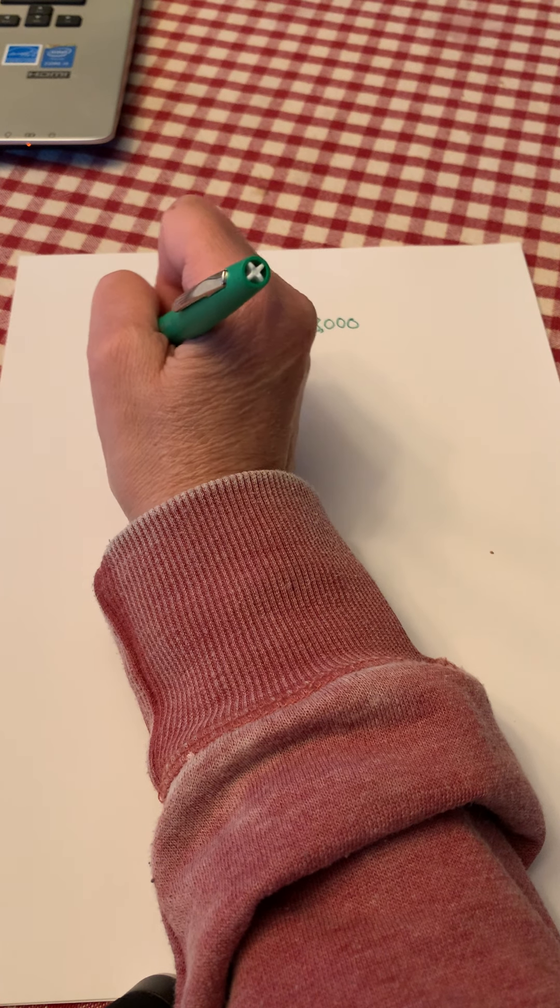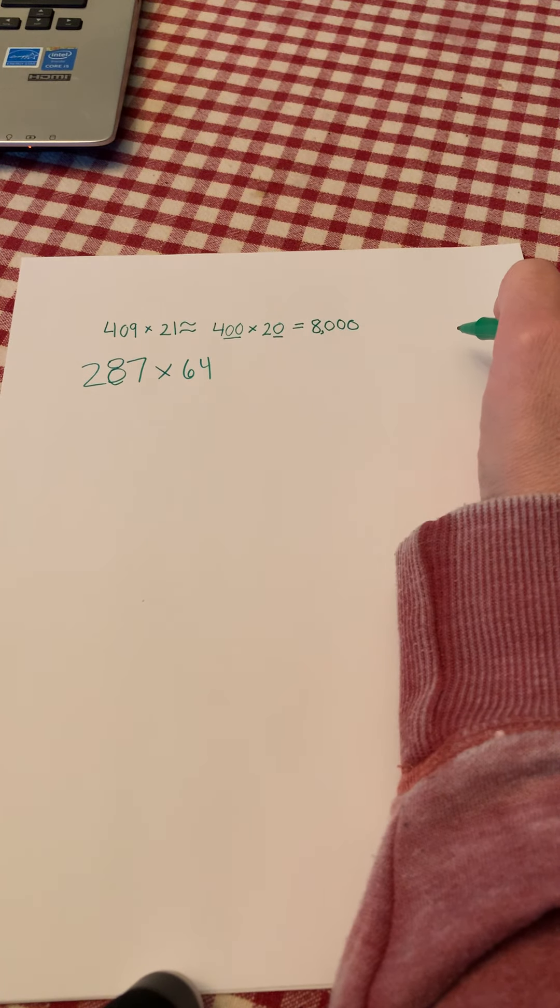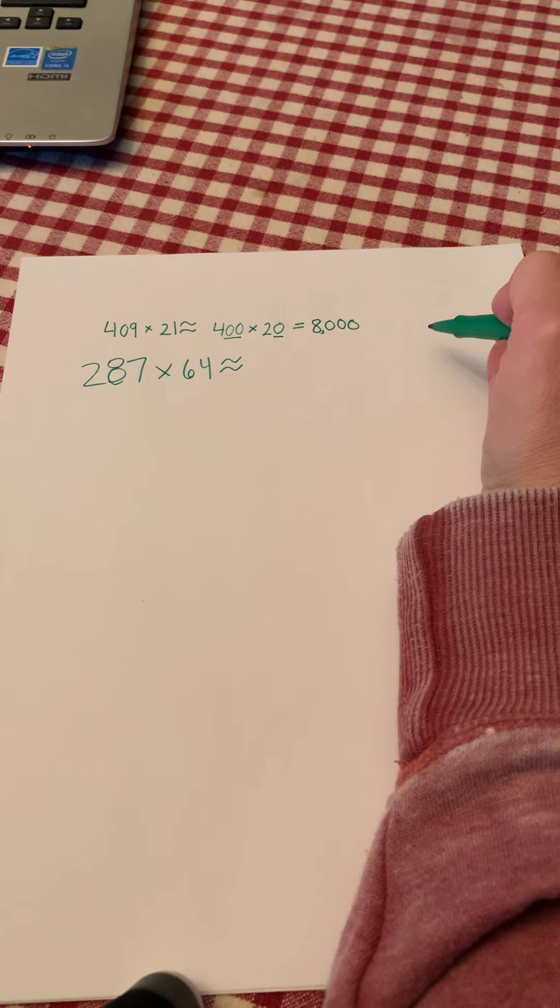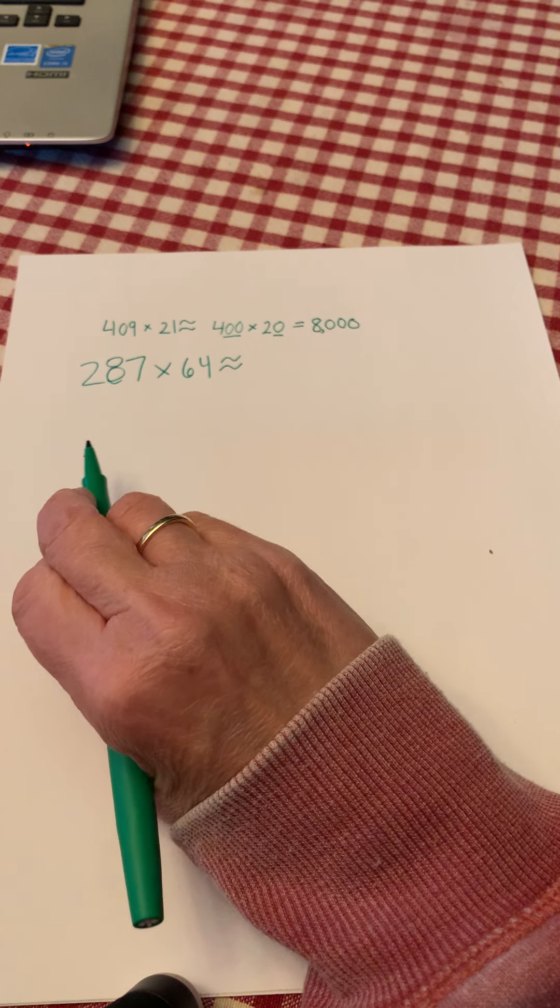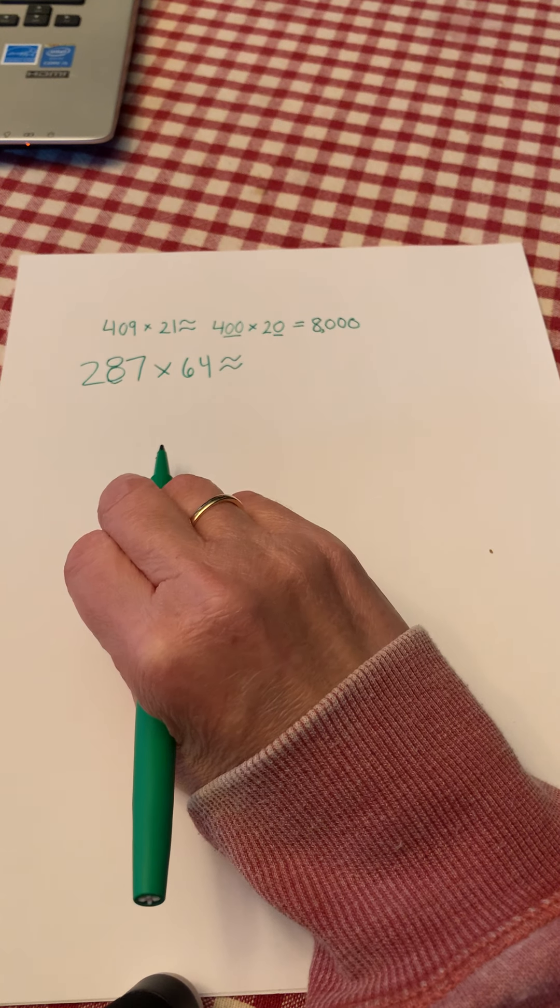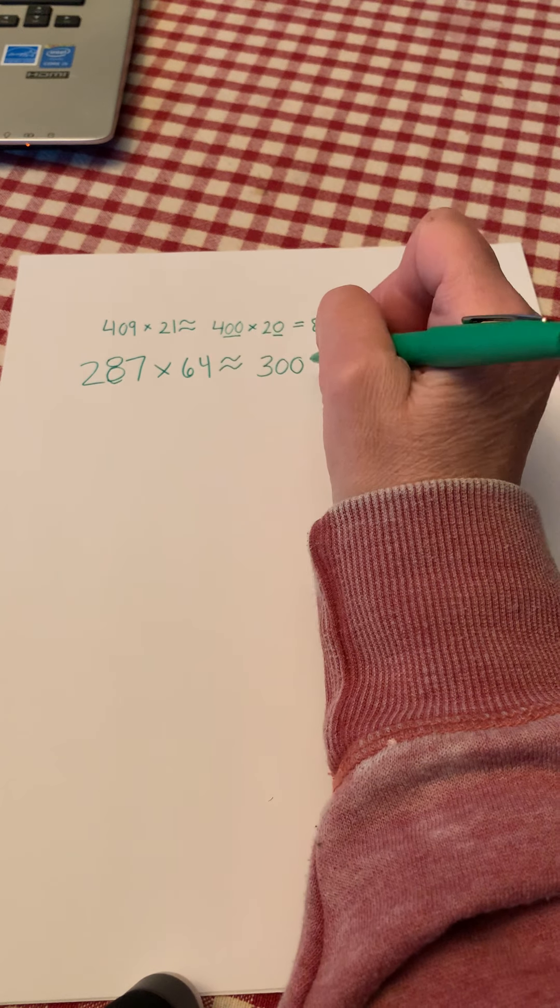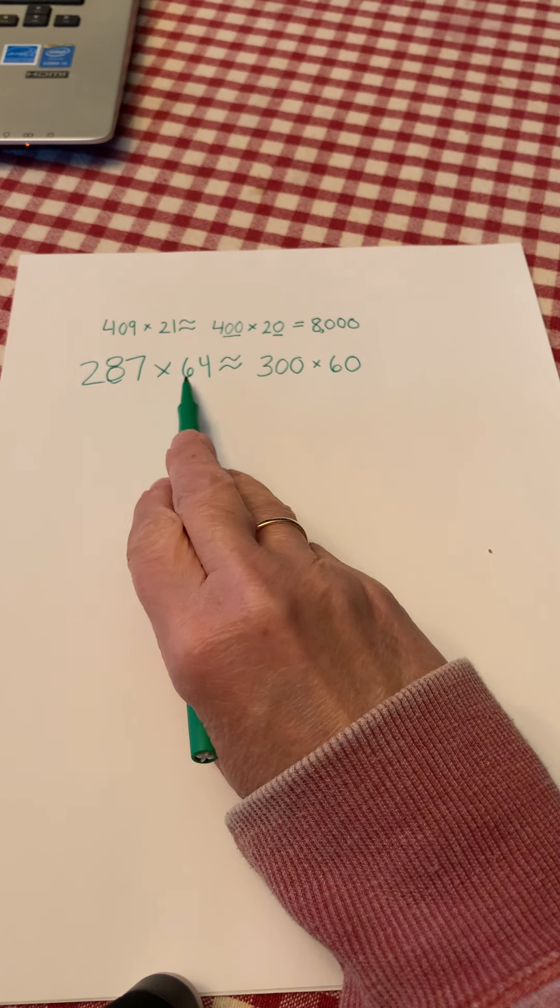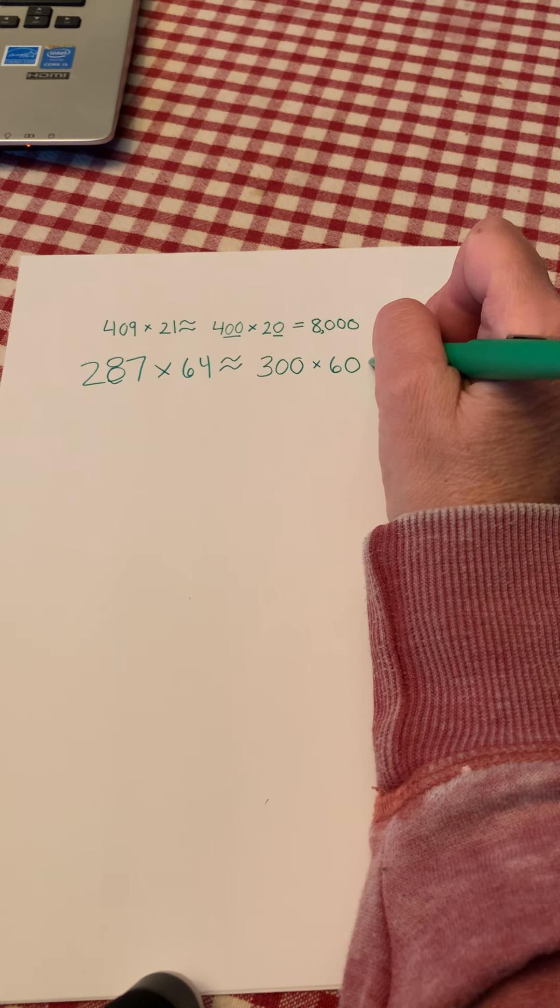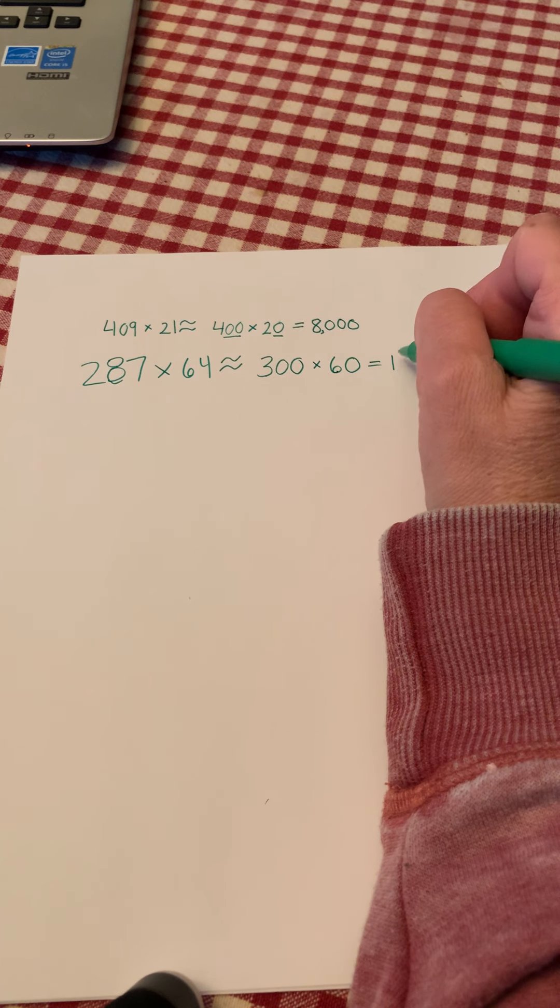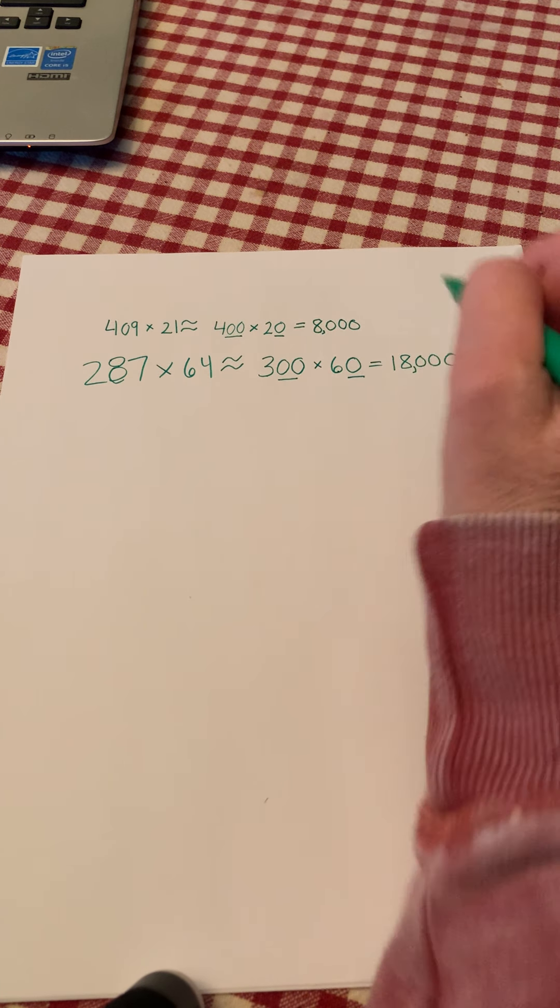Let's try another one. What if we have 287 times 64. Draw your rounding equal sign to show it's an estimate and round your factors to two factors you think are easier to multiply by. For this one I would round 287 to 300 and I would round 64 to 60. You may have chosen 65 and that's fine, but I like to round to the nearest tens place or hundreds place, makes it a lot easier to multiply. Then I multiply this. 3 times 6 is 18 times 100, I add two zeros times 10 and I end up with 18,000.